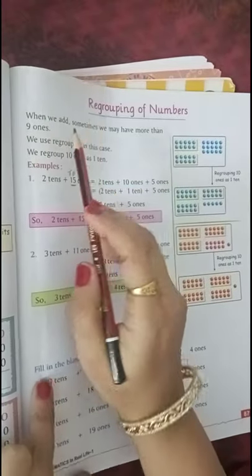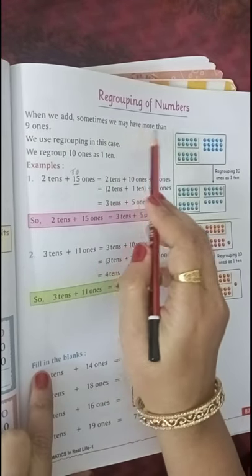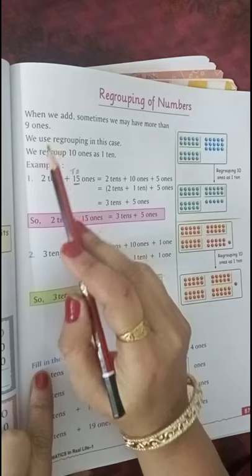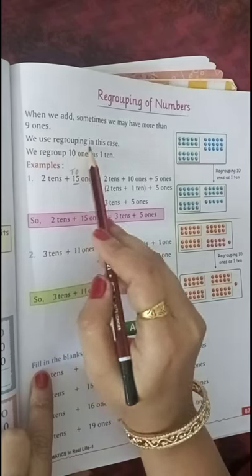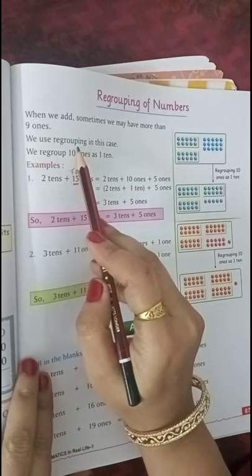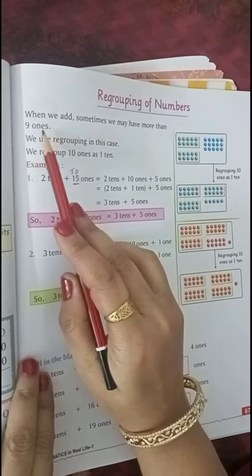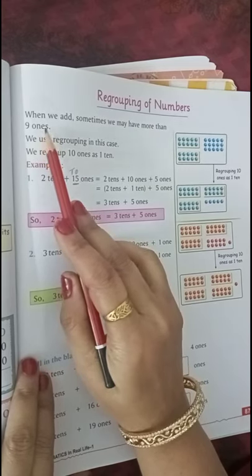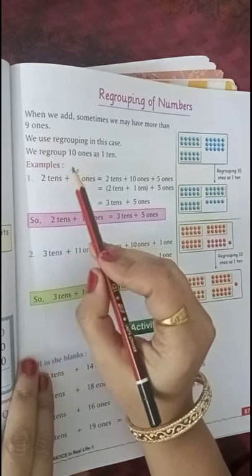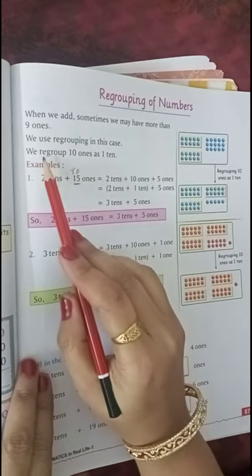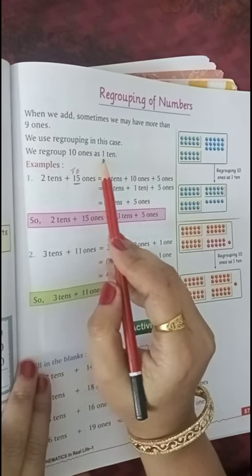When we add sometimes, we may have more than 9 ones. We use regrouping in this case. When do we do regrouping? When we have more than 9 ones.